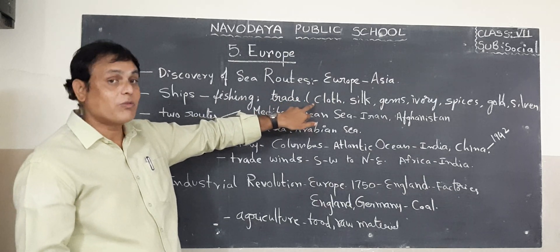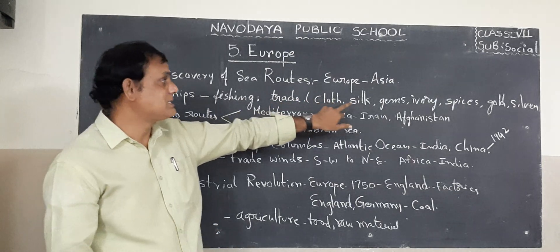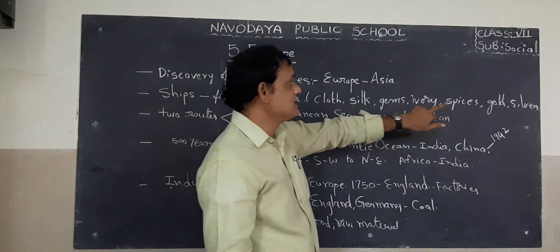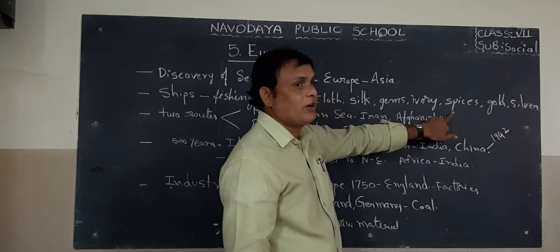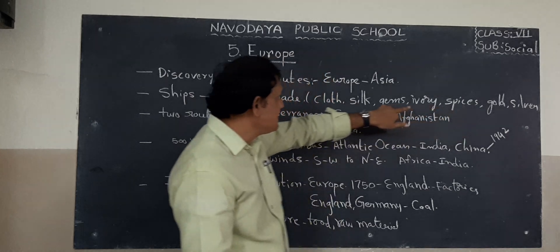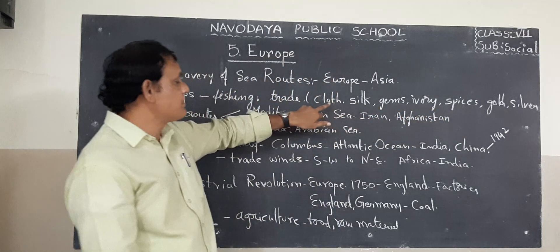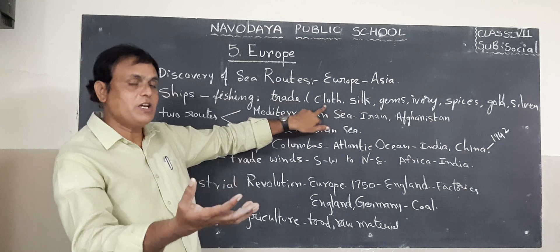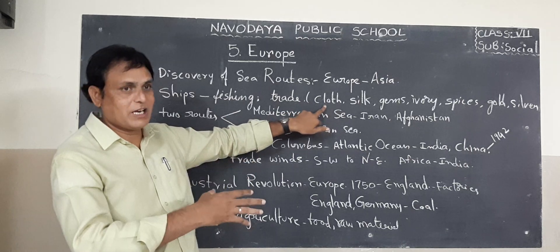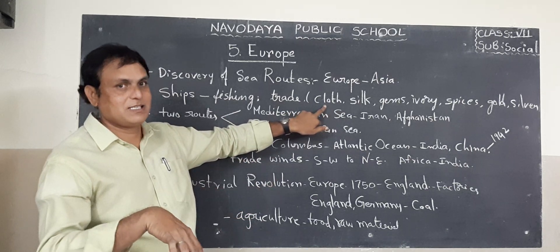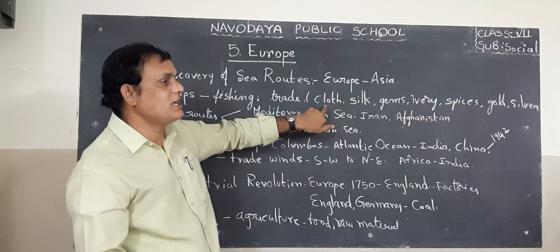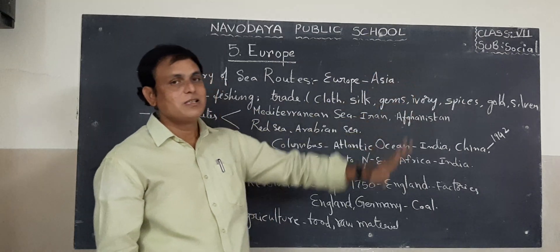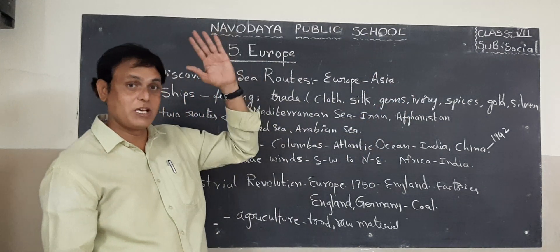What did they trade? Cloth, silk, gems, ivory, and spices. They were trading these goods from one country to another through overseas routes, and in this process they were earning gold and silver coins in those days.